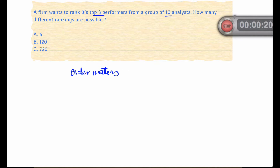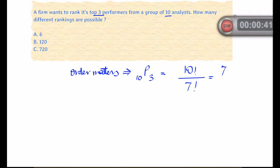So if you select analysts a, b, and c, it's different from b, a, and c, or c, b, and a. So when the order matters, we apply the permutation formula. This becomes 10P3, which is equal to 10 factorial divided by (10 minus 3) factorial. And that gives us 720. So C is the correct answer.